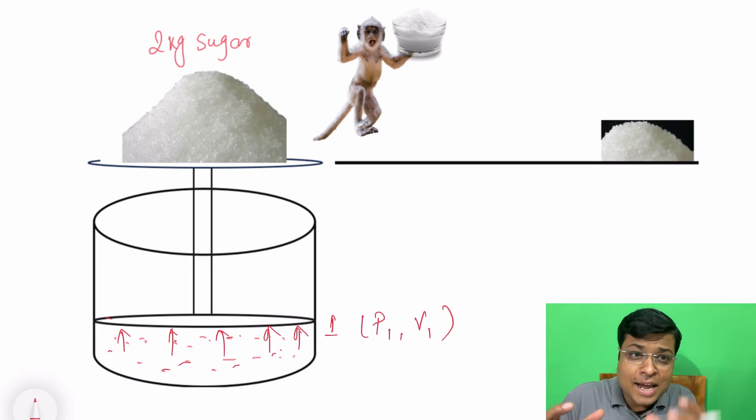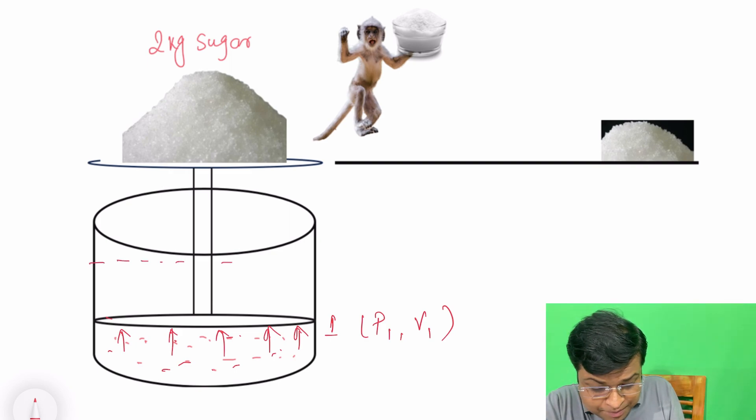Now a monkey suddenly came and lifted the entire sugar, 2 kg sugar, and ran away. So what will happen? This piston will move upward, upward very fast, and it will reach suppose this point where pressure is P2 and volume is V2.